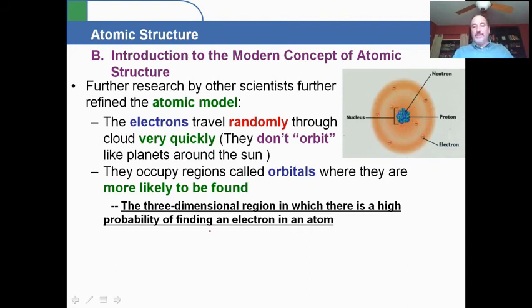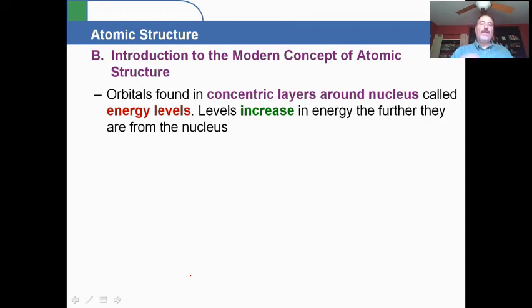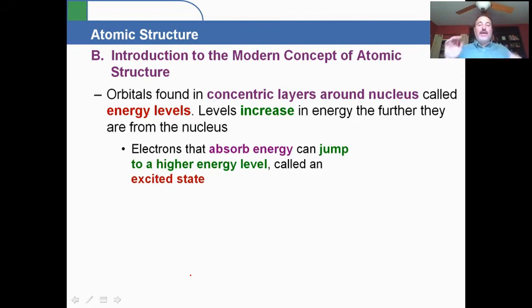These orbitals are themselves found in concentric layers around the nucleus. These layers are very important - they're known as the energy levels. Electrons occupy these various energy levels. An electron, once it's in an energy level, that's where it is, and it depends on how much energy it has. The further from the nucleus it gets, the more energy these electrons have. They have very specific energy levels.